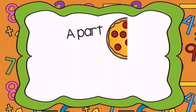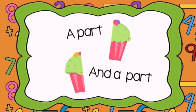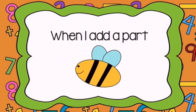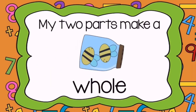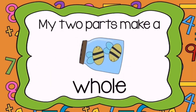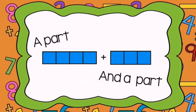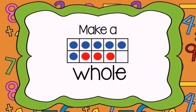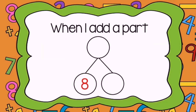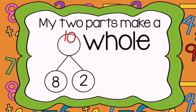A part and a part make a whole. A part and a part make a whole. When I add a part to another part, my two parts make a whole.